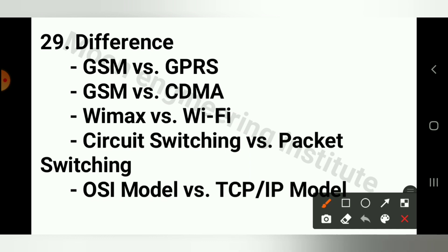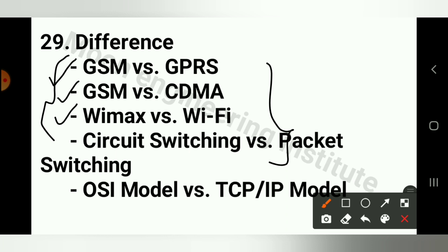Question number 29 has differences — any one difference may be asked. 1st difference: GSM vs. GPRS. 2nd difference: GSM vs. CDMA. 3rd: WiMAX vs. Wi-Fi. 4th difference: Circuit Switching vs. Packet Switching. And 5th difference: OSI Model vs. TCP/IP Model.